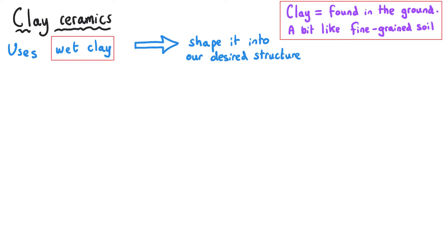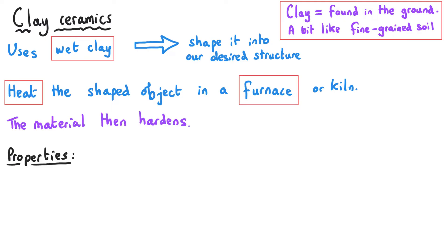Once it's in the shape that we want it to have we heat it to a high temperature in a furnace and that makes the material harden. Once we've done this the ceramics are very very hard substances and they also have a high melting point. This gives them a variety of different uses.